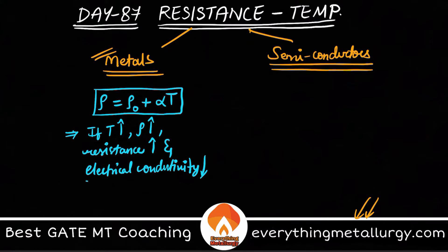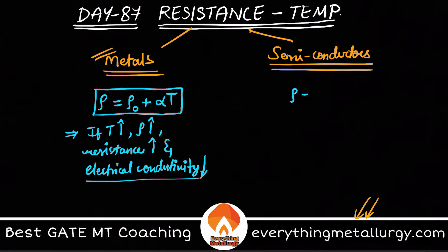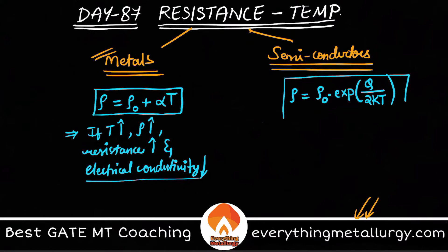Now coming to the other type of materials — semiconductors. In semiconductors we have various types of charge carriers like electrons and holes, and all of them are contributing to the resistivity. The equation for resistivity in semiconductors is: ρ = ρ₀ · exp(Q / 2kT).